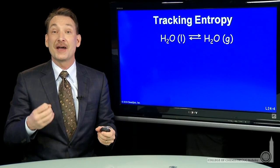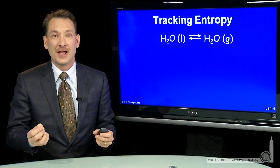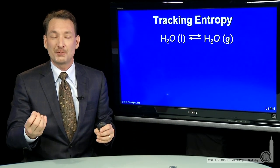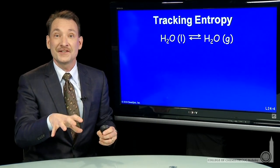The natural direction of a process is determined by the entropy change in the universe. But it's difficult to track the entropy of the system and the surroundings, so we'd rather have an expression that involves just the system.